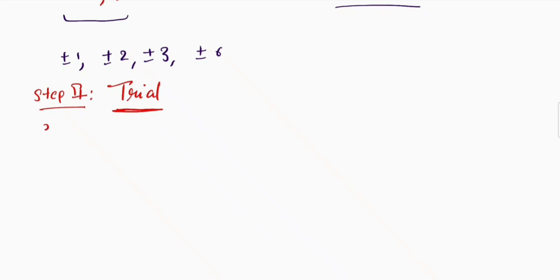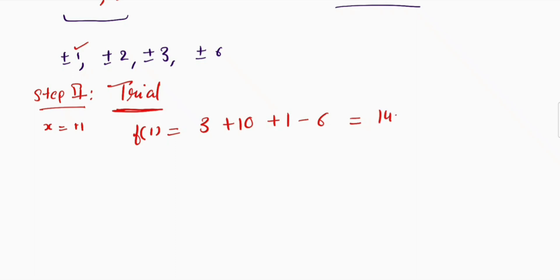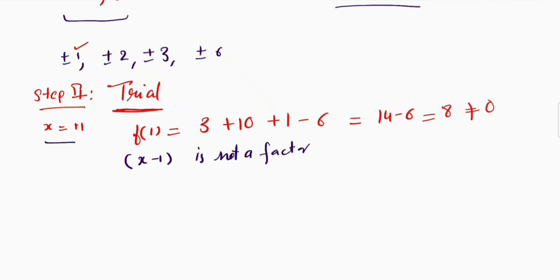By the trial method we will find the factor of this cubic polynomial. First, let me put x = 1. So f(1) = 3 + 10 + 1 − 6 = 14 − 6 = 8, which is not equal to 0. By the factor theorem, (x − 1) is not a factor of the given cubic polynomial.